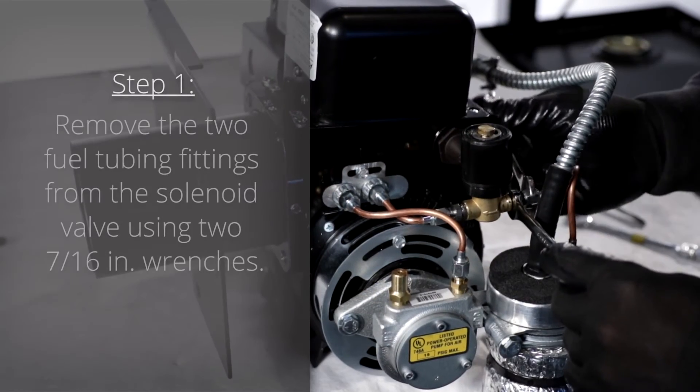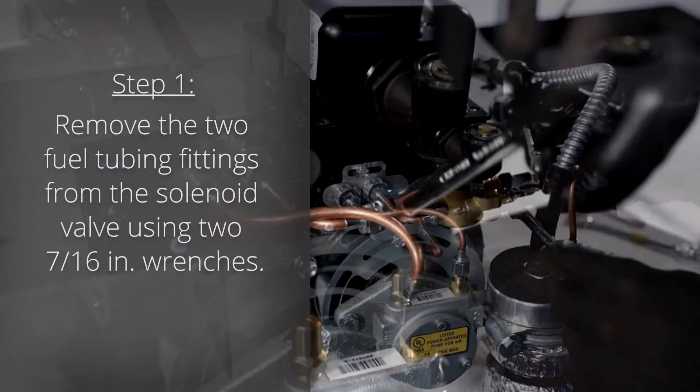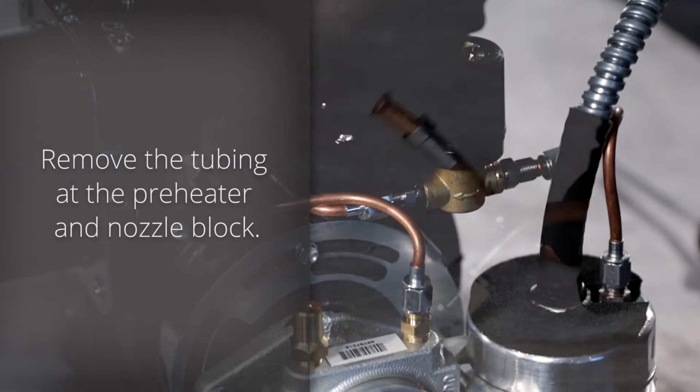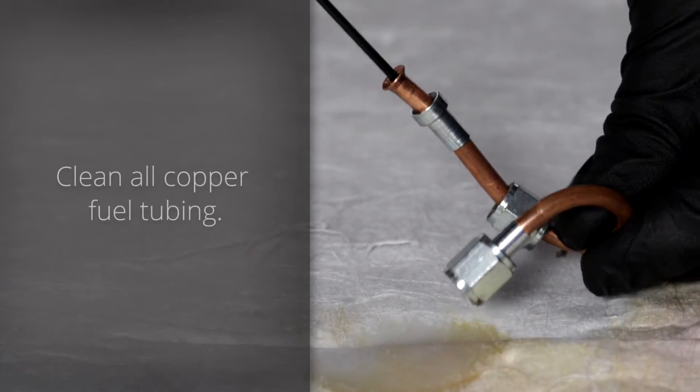Step 1: Remove the two fuel tubing fittings from the solenoid valve using two 7/16 inch wrenches. Then remove the tubing at the preheater and nozzle block. Clean all fuel tubing.